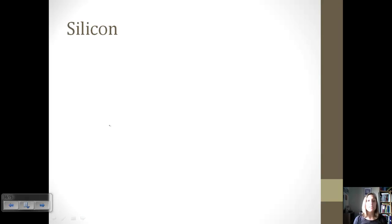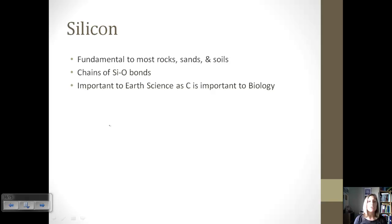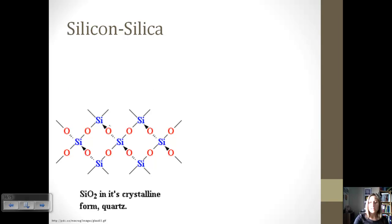The other element that we're going to look at for network solids is silicon. So silicon is fundamental in most rocks, sands, and soils. It's a big part of that stuff. And usually we will get chains of Si-O bonds, so silicon bonded to oxygen. It basically is as important in earth science as carbon is to biology. Carbon compounds and organic compounds are present everywhere in biology. Silicon is present in earth science.